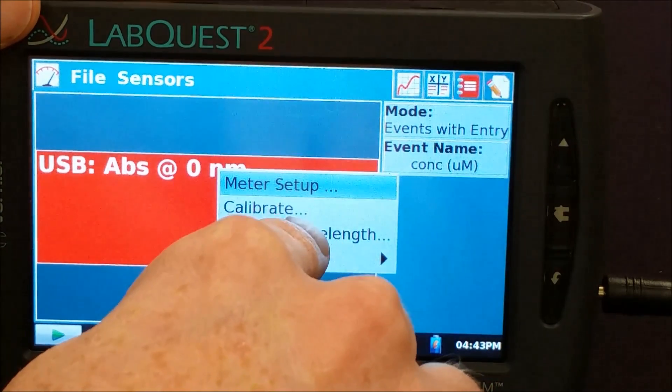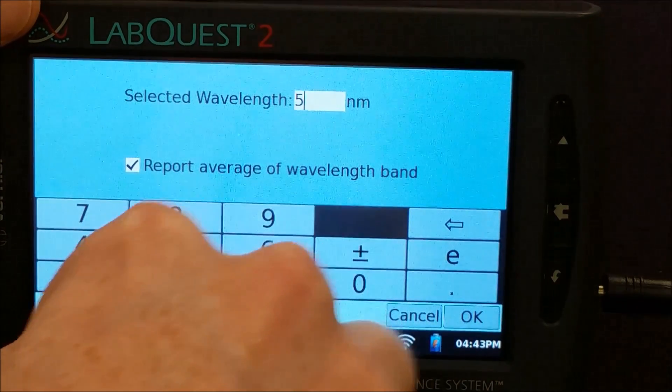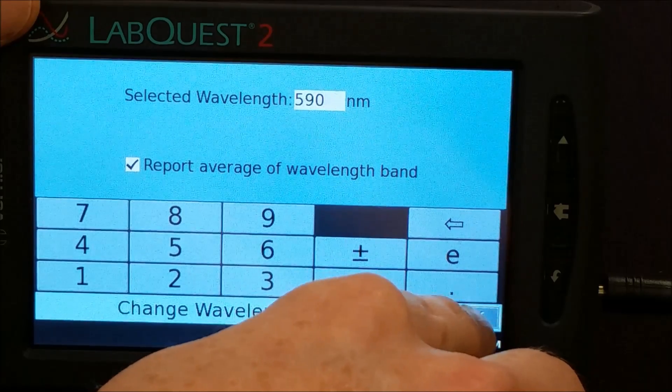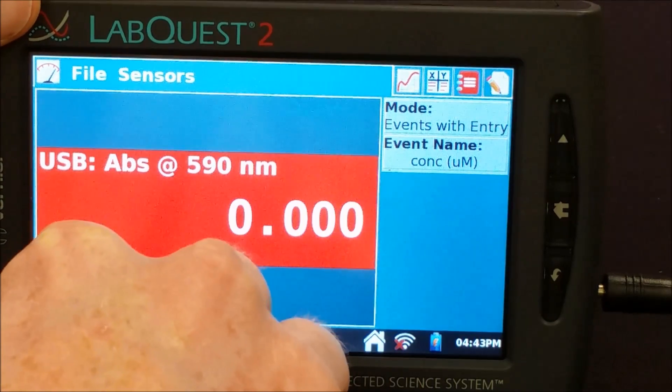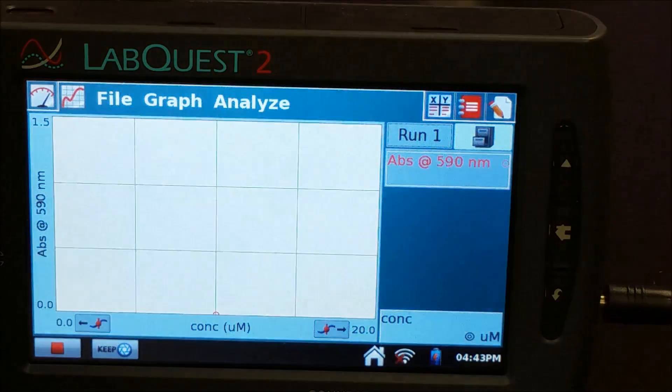And we want to change our wavelength. So I'm going to change the wavelength to 590. And if you don't know what the wavelength is, you can always plug in under Full Spectrum and see what the peak wavelength is. So we're going to go ahead and play now. Take out our blank.